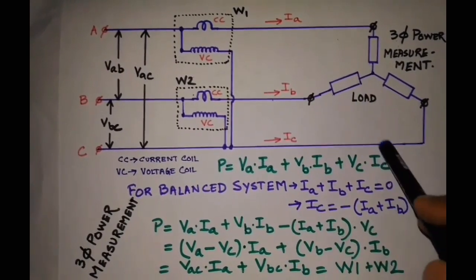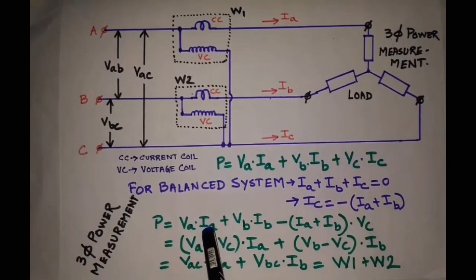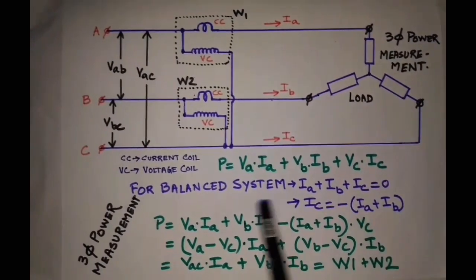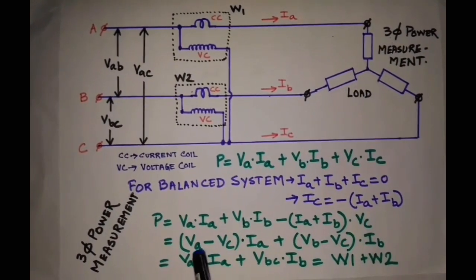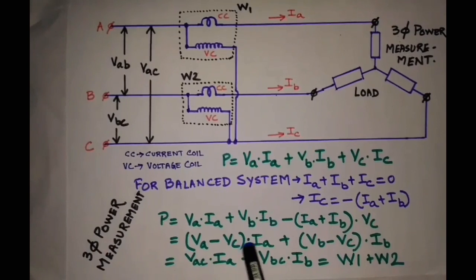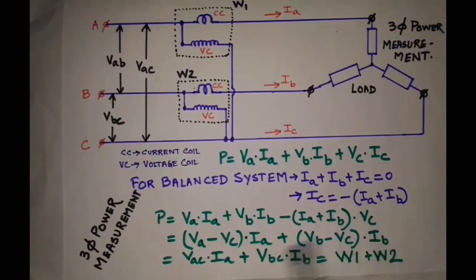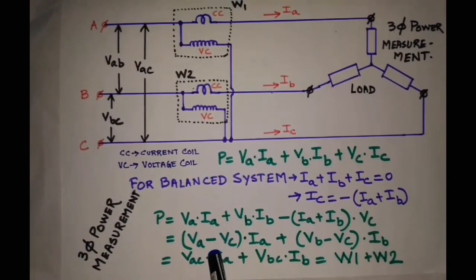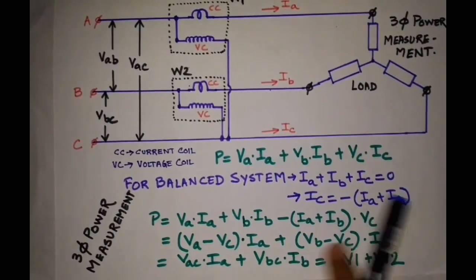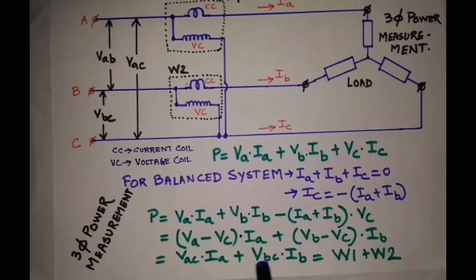Now we will replace this Ic by this value, so we will get P = Va·Ia + Vb·Ib - (Ia + Ib)·Vc. Rearranging this, we will get (Va - Vc)·Ia + (Vb - Vc)·Ib. So Vac, Va - Vc, means voltage applied across this terminal Vac, and Vb - Vc means voltage applied across this terminal, that is Vbc.